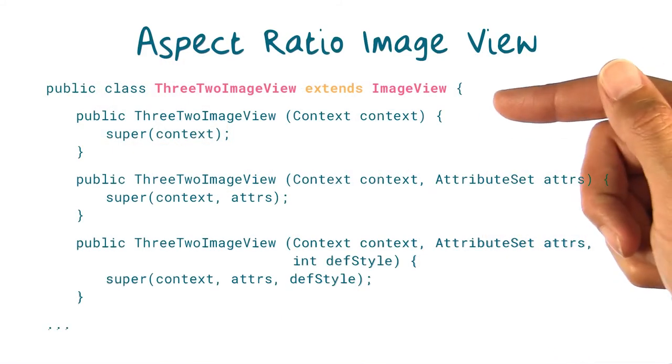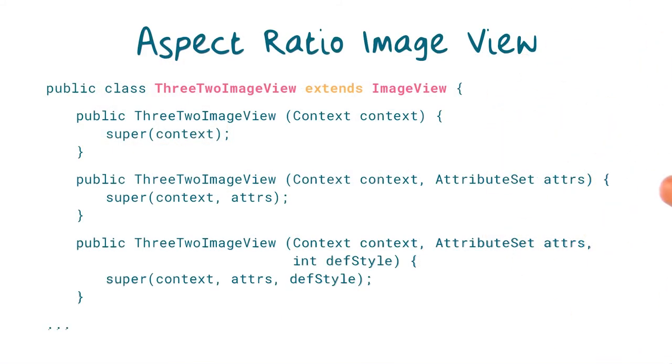Let's create a new class. We're calling it ThreeTwoImageView here, and we'll extend from ImageView itself. Now we'll generate all of the required constructors to handle creating this view from code or from XML.